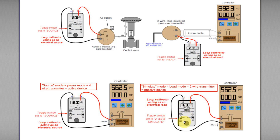The signal calibrator switch is set to simulate mode. Simulate mode is opposite to source mode — it will make the loop calibrator become an electrical load. Although it does not power up the whole circuit, it will inject the signal to the circuit. The controller terminal will act as the electrical source, because this wire is connected to positive V, which is internally connected to the controller's internal power source. So this power source will power the whole loop.